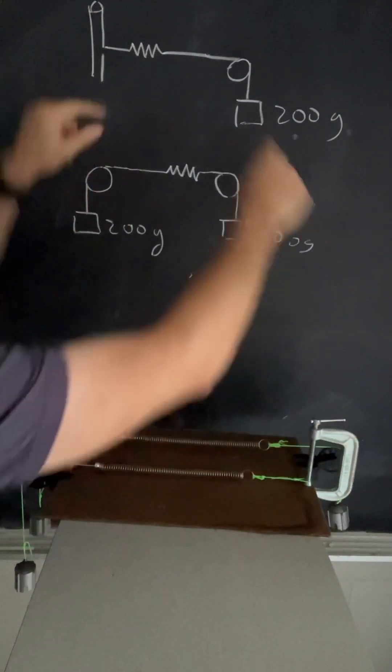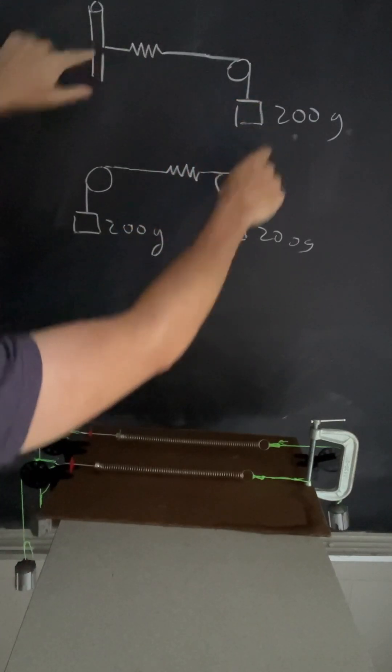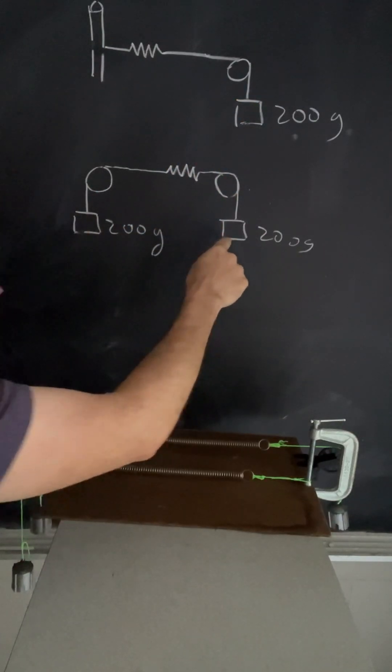So in this case, that clamp is the other force pulling the other way. In this case, the weight is the other force.